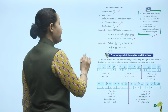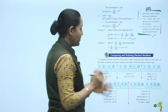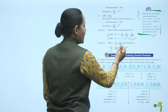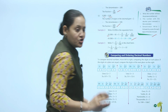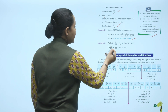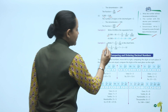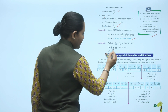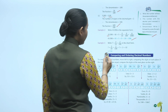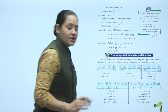Write in short form: 7 plus 3 upon 10 plus 2 upon 100. Converting: 3 upon 10 equals 0.3 and 2 upon 100 equals 0.02. So the short form is 7.32.